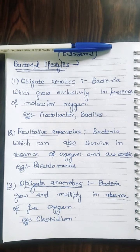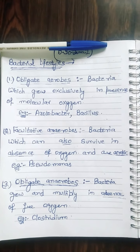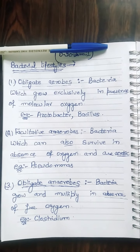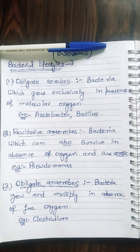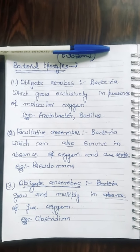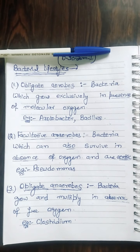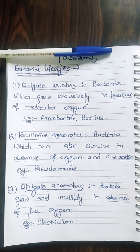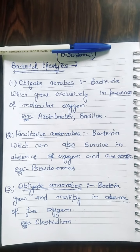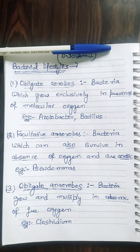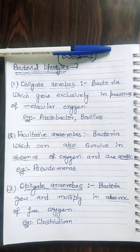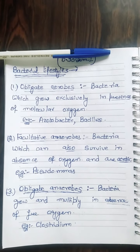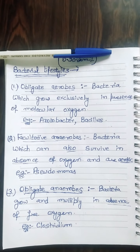The next type is facultative anaerobes — bacteria which are aerobic but can also survive in the absence of oxygen. An example is Pseudomonas. Next are obligate anaerobes — bacteria which grow and multiply only in the absence of free oxygen. An example is Clostridium.